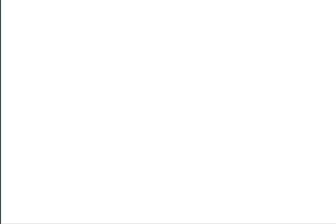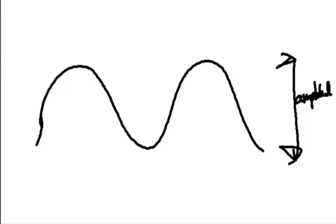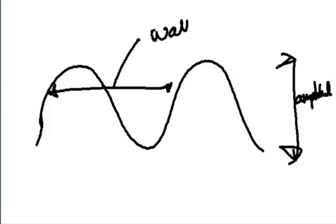Sound also arrives to us as waves — as sound waves. Now, the sound wave is characterised by its amplitude, which is its width. And there are two ways of putting it: you can say either its wavelength, or you can also talk about its frequency.